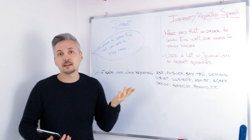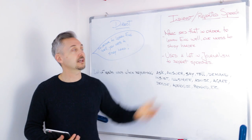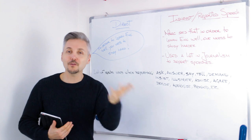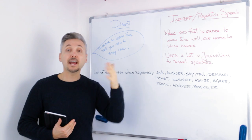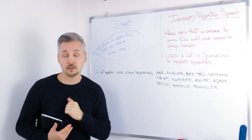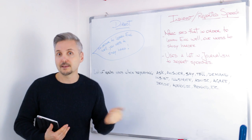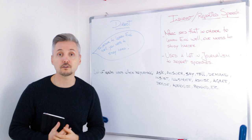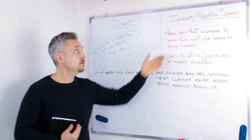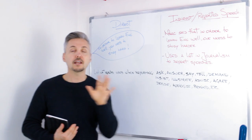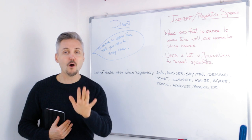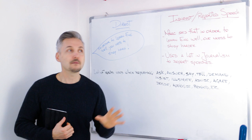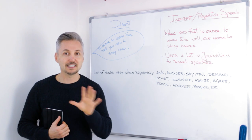But when do we use the indirect or reported speech? Actually, when you want to report what somebody said. And it's used a lot in journalism — if you want to report a politician or a celebrity, you will use reported speech. Now, it's important that you know every tense in English, and know them well, because we're going to use them all in this lesson.